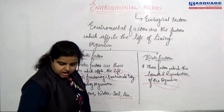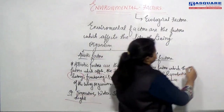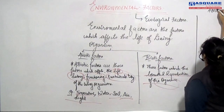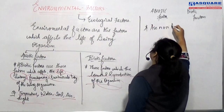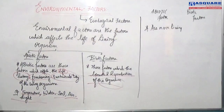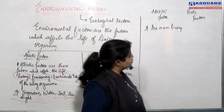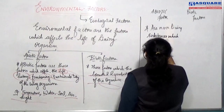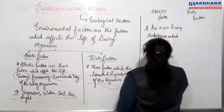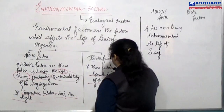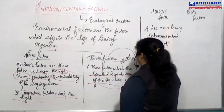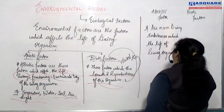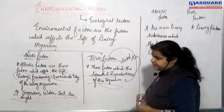Abiotic factors are also called non-living factors. They are non-living substances which affect the life of living organisms. Biotic factors are living factors related to growth and reproduction of organisms.